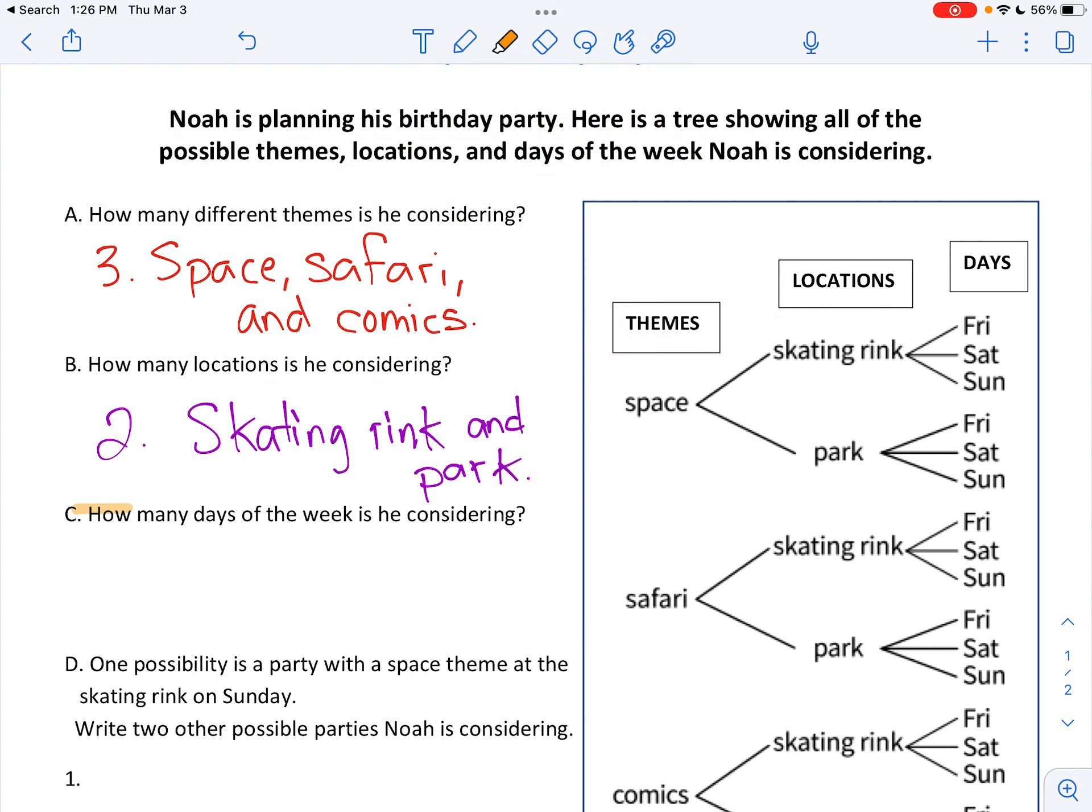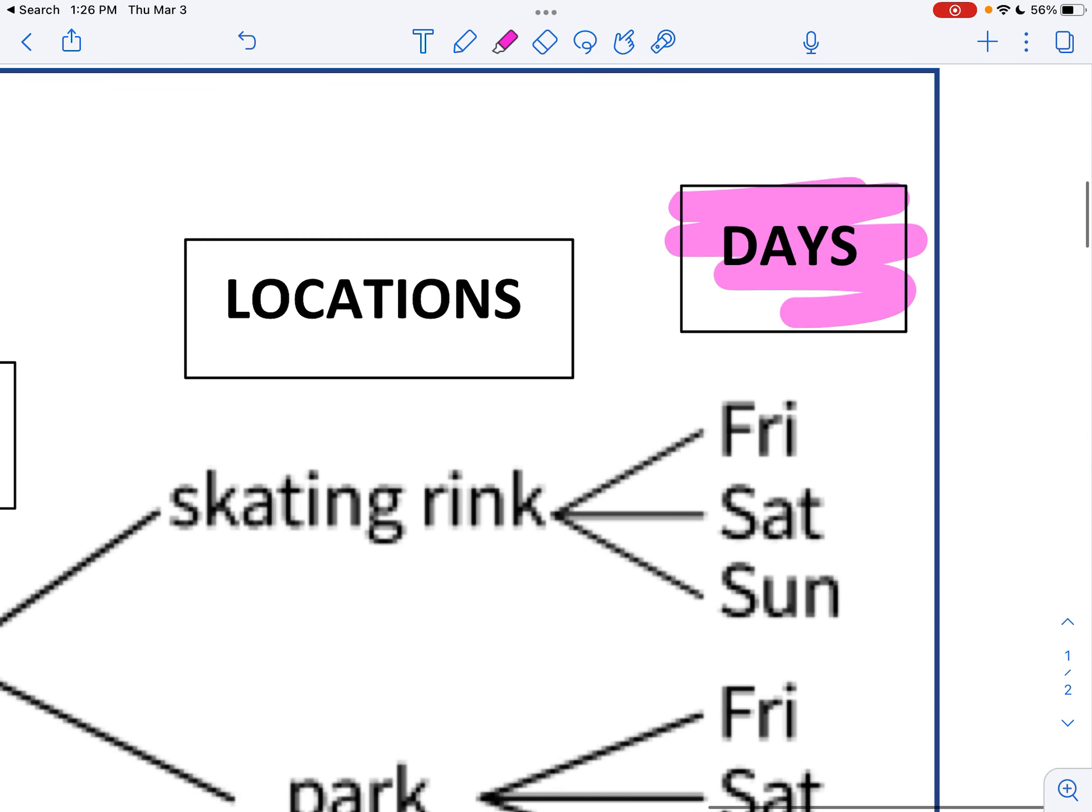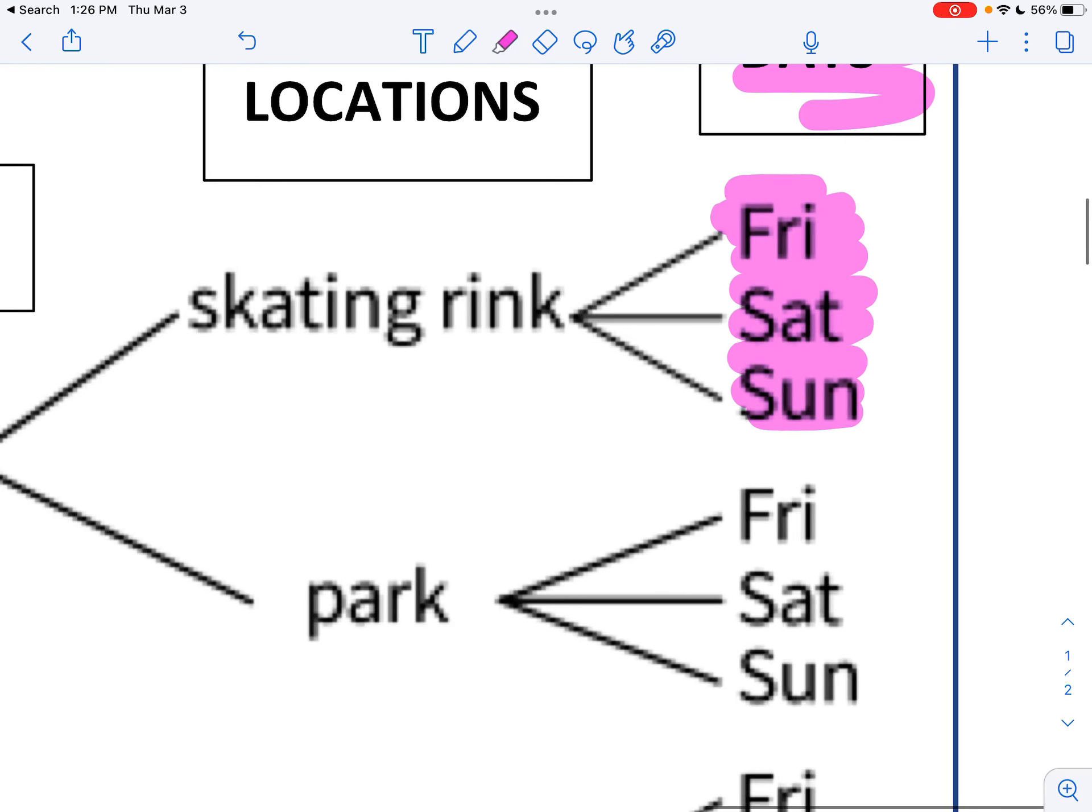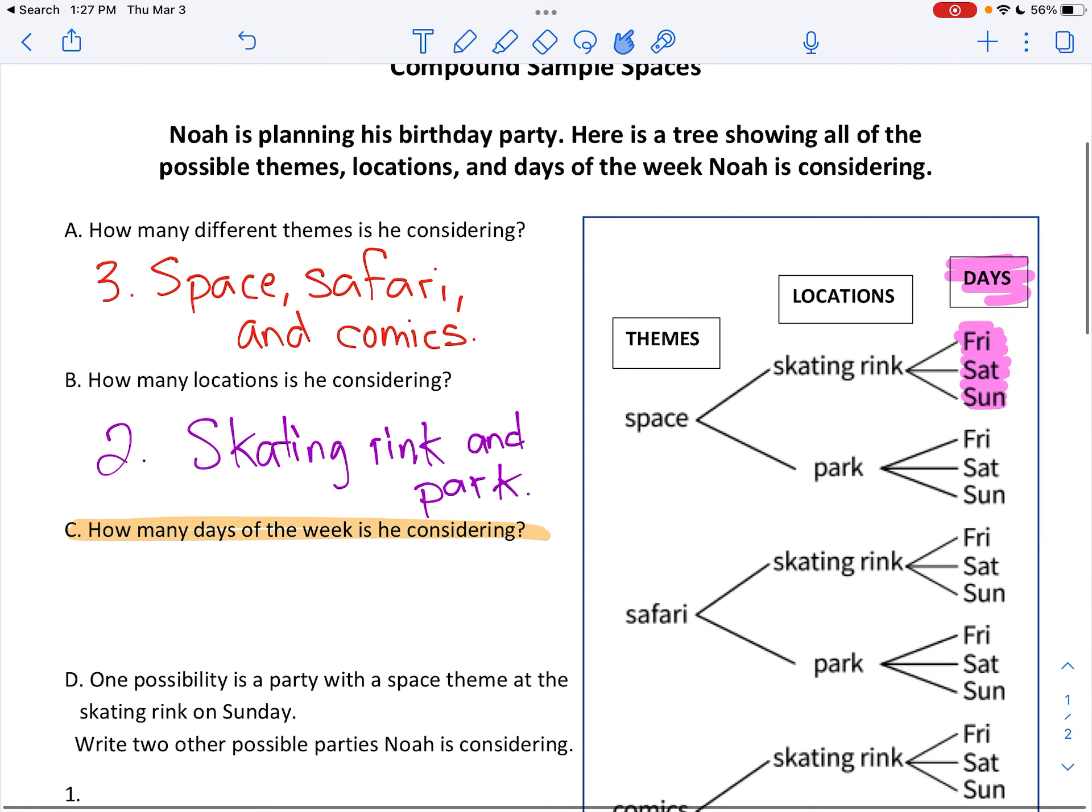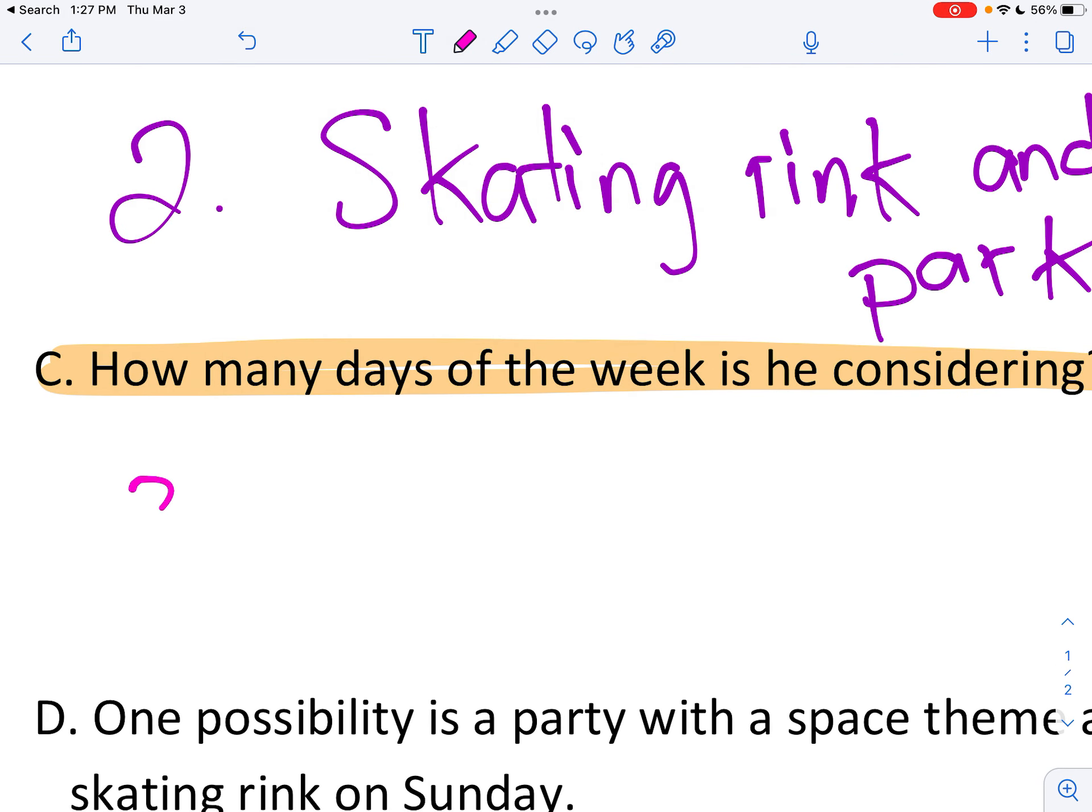Let's keep on moving. The next one, number C or letter C. How many days of the week is he considering? So let's find the days. They're at the end. I zoom in. There's my days. Looking down: Friday, Saturday, Sunday. And if I keep on going, oh, I hit Friday again. So these are repeats, so I don't need them. So there's Friday, there's Saturday, and Sunday. That's three days. Three: Friday, Saturday, Sunday. And I'll put day.